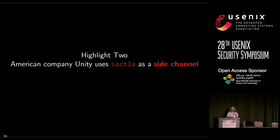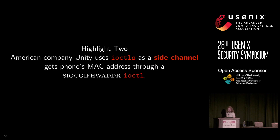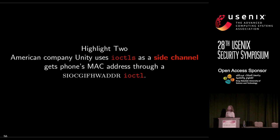The second highlight: the American company Unity — which produces a game engine, ad engine, and analytics — uses ioctl as a side channel. An ioctl is a low-level input-output control that allows a rich space of API functionality not typically used very often. As a result, it wasn't properly protected on Android. Specifically, they use the socket ioctl SIOCGIFHWADDR, which gets the MAC address of the device. Unity sends the hash of the MAC address calling it the UUID — the universally unique identifier — presumably in the JSON transmission they send.